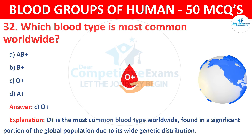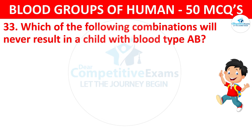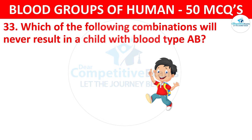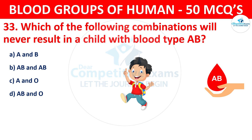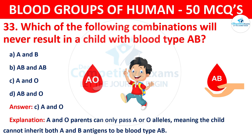Question 33: Which of the following combinations will never result in a child with blood type AB? The correct answer is C, A and O blood types. A and O parents can only pass A or O alleles, meaning the child cannot inherit both A and B antigens to be blood type AB.